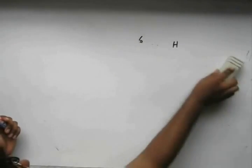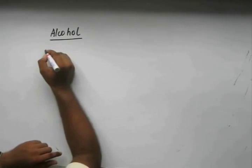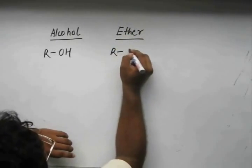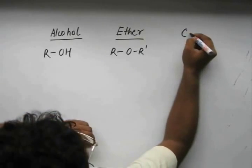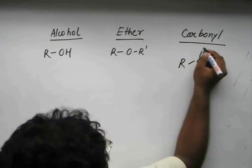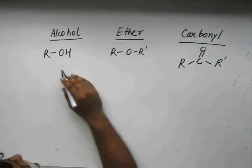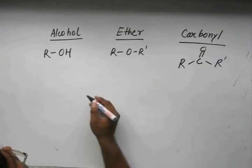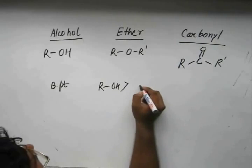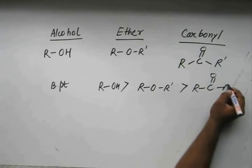Let's see what happens in the case of ethers. The general formula for an alcohol is R-O-H. Ether is R-O-R'. Carbonyl compounds are R-C(=O)-R'. When we compare the boiling points of these three different functional groups, we see that the boiling point of R-O-H is greater than the boiling point of R-O-R', which is still greater than the boiling point of carbonyl compounds.